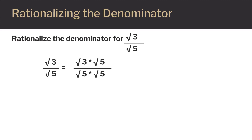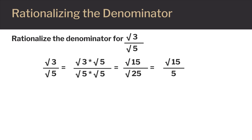In the numerator, I have the square root of 3 times the square root of 5, which equals the square root of 15. In the denominator, I have the square root of 5 times the square root of 5, which equals the square root of 25. Since 25 is a perfect square, the square root of 25 is just 5.